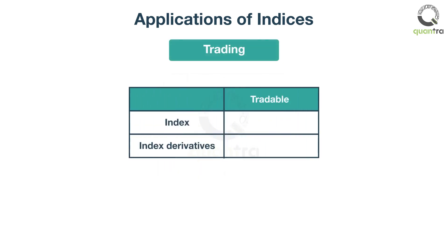For trading, indices in their raw form are not tradable, as they are not financial instruments — they merely represent the basket of securities. However, derivative products such as futures and options on indices are traded in most markets.